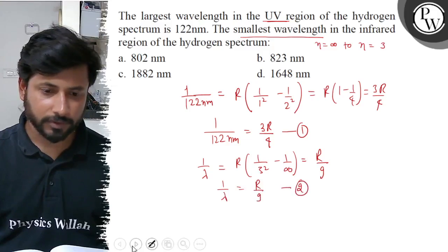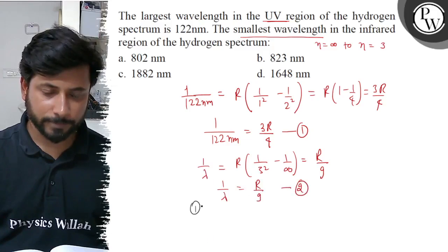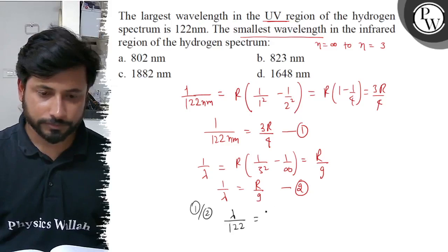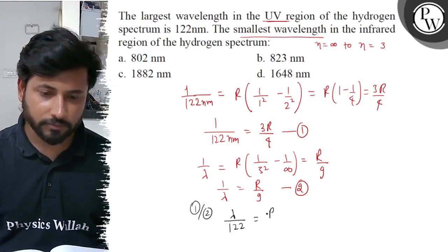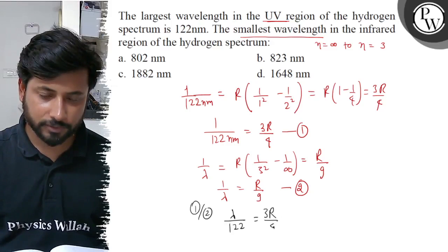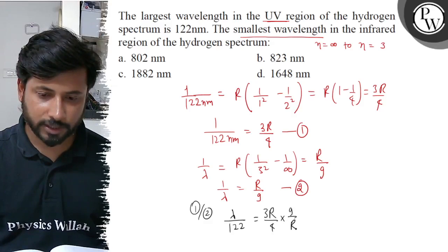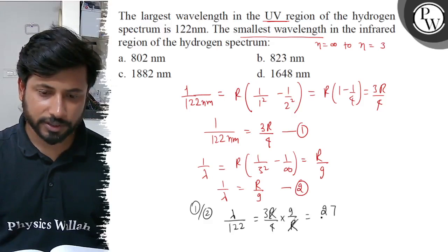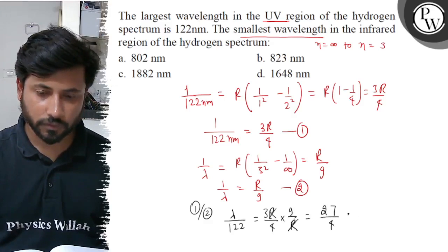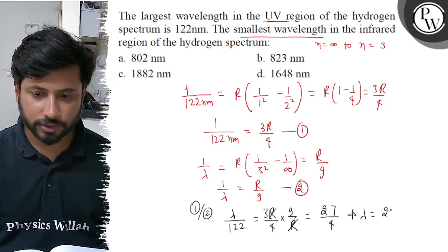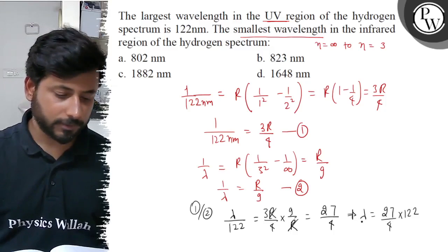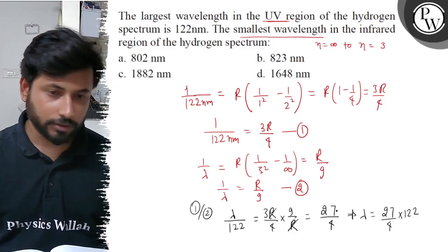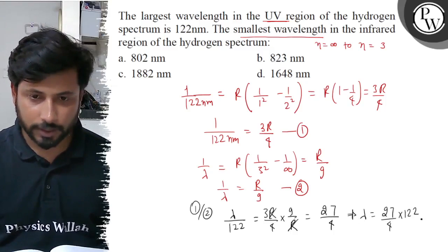Now take equation 1 and 2 ratio. Lambda by 122 equals 3R by 4 into 9 by R. R to R cancels. 27 by 4. Lambda equals 27 by 4 into 122. We can solve this and get 823.